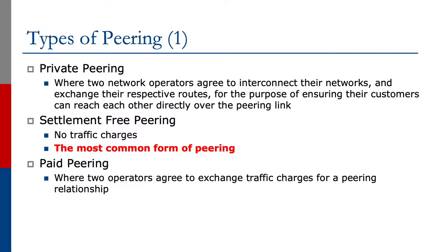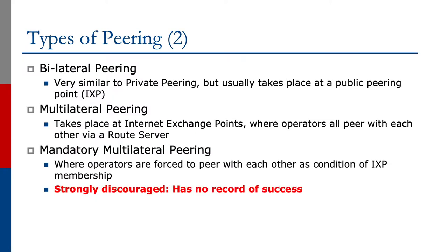Paid peering is where two operators agree to exchange traffic charges for a peering relationship. How paid peering operates usually depends on the two operators concerned. Bilateral peering is very similar to private peering but usually takes place at a public peering point, for example an internet exchange point.